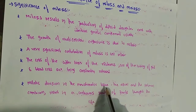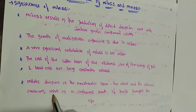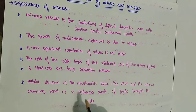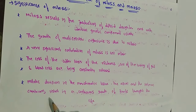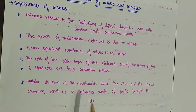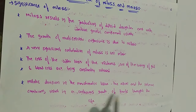Mitotic division in the meristematic tissue — the apical and lateral cambium — results in continuous growth of the plant throughout its life. The cambium present along the lateral surface of the stem and roots results in this continuous growth.